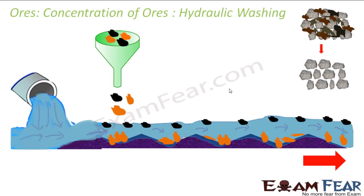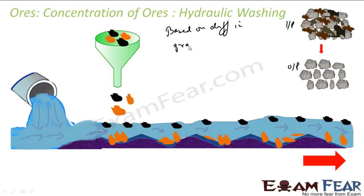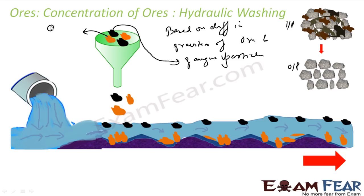The first concentration process we'll discuss is hydraulic washing. The input is raw ore and the output is concentrated ore. Hydraulic washing is based on the difference in gravity — the difference in gravities of the ore and the unwanted gangue particles. Here the black ones are the gangue particles and the orange ones are the ores. It is also called gravity separation.